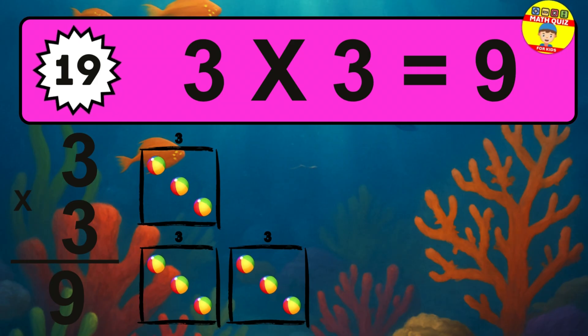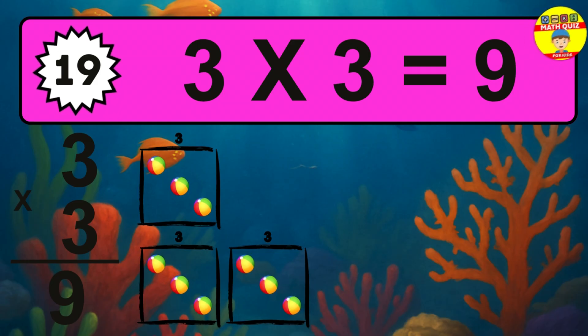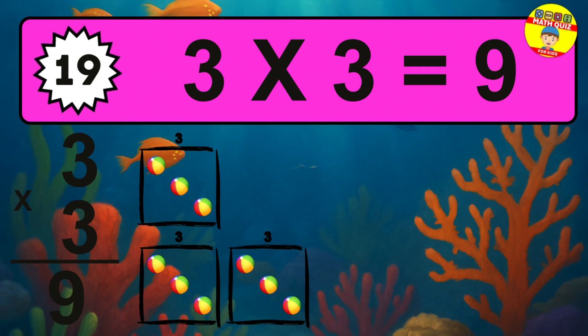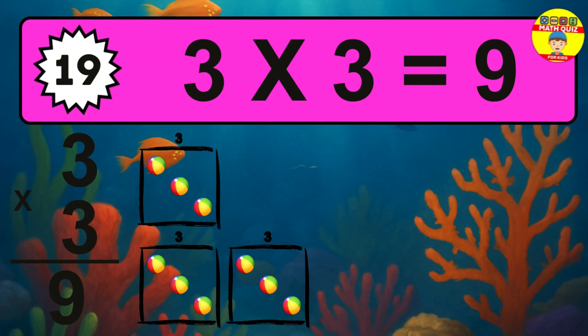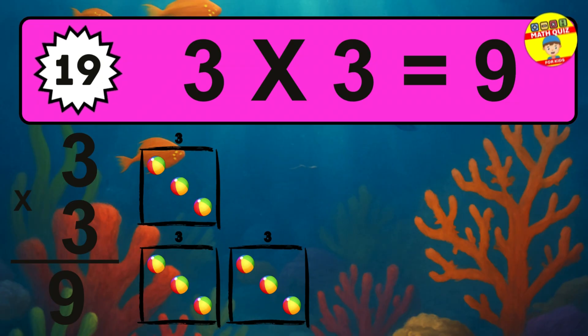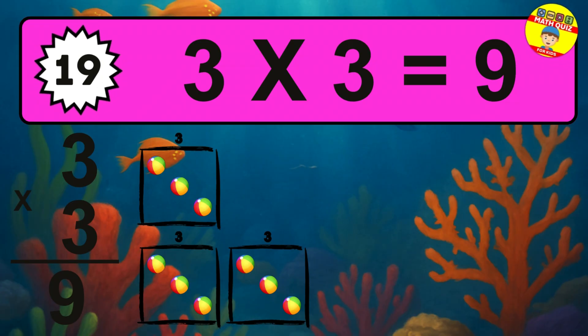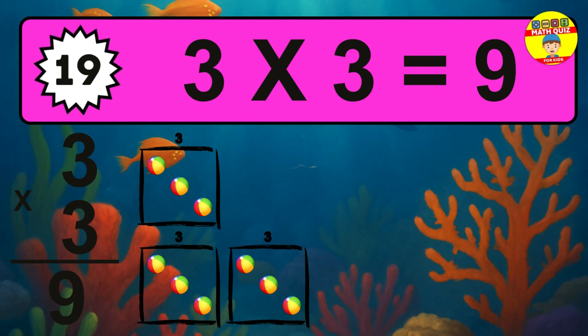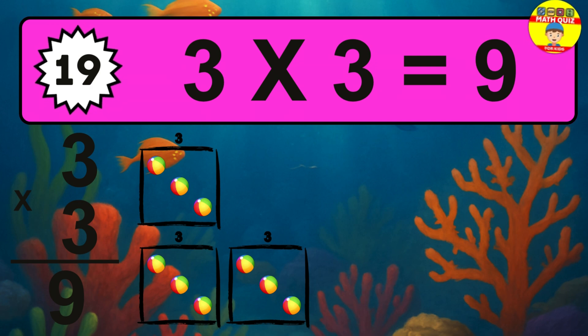Question 19. 3 times 3 equals what? The answer is 3 times 3 is 9. To calculate, we have 3 groups with 3 balls each one. So, how many balls do we have? 9 balls.